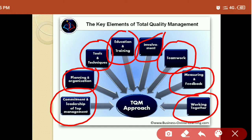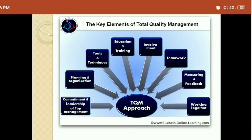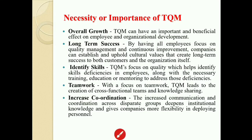The last key element is working together. If persons work for the organization, they should work together to maintain quality in the product they produce. So these are all the key elements of Total Quality Management.